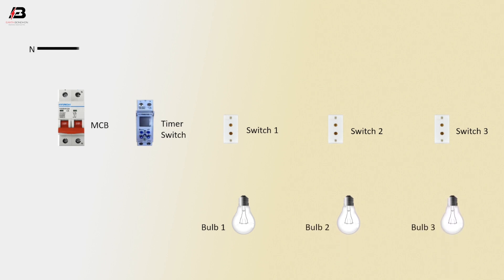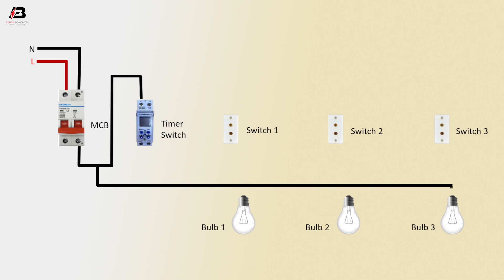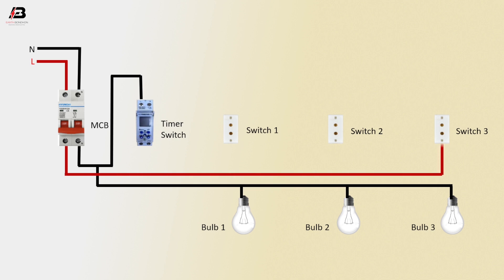Negative connection to MCB neutral point, positive connection input to MCB positive point. Negative connection from MCB, connect to timer switch. Negative connection to bulb 3, valve 2, and valve 1. Positive connection from MCB to connect switch 3.